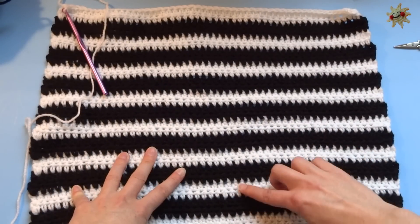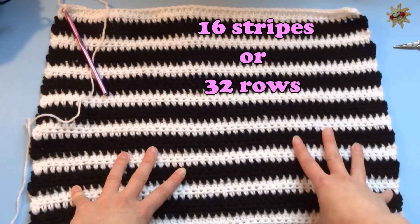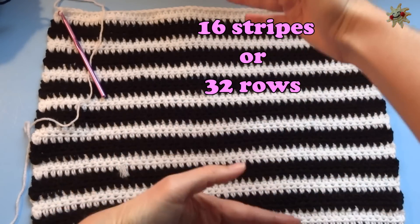So for me, that is 1, 2, 3, 4, 5, 6, 7, 8, 9, 10, 11, 12, 13, 14, 15, 16 rows. 16 rows gives me the width that I want.